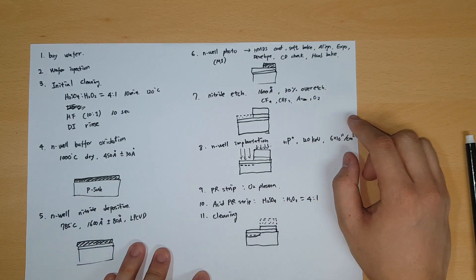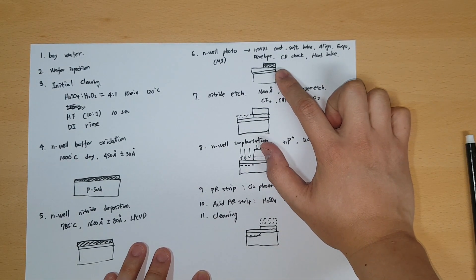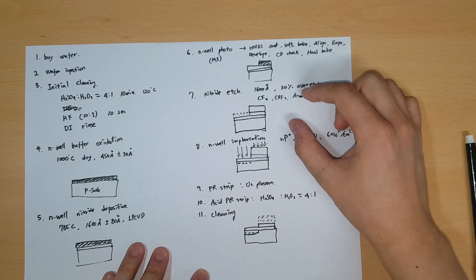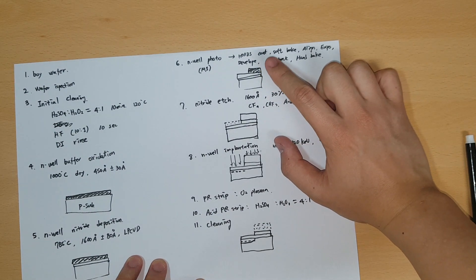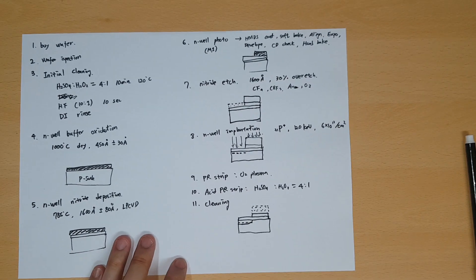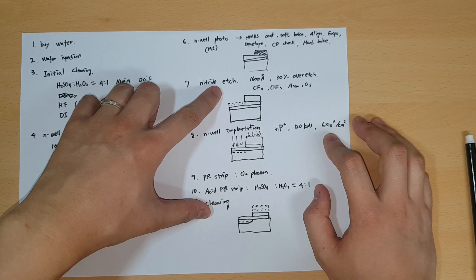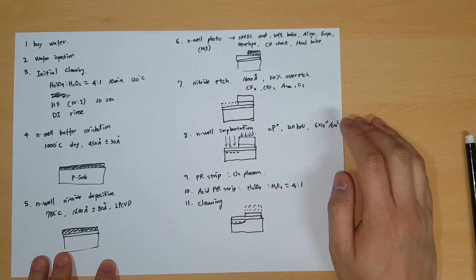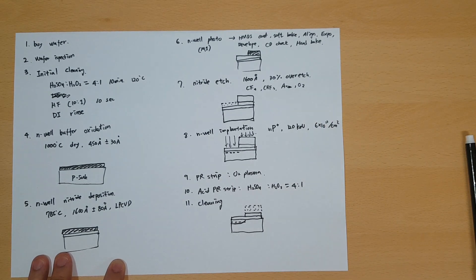Step seven: you etch the nitride layer. In my diagrams, the black layer represents what we just made and the dotted image represents what we erased at that step. So the black layer is what we made, and the dotted area is what we removed. There will be a nitride edge here, and you must always over-etch — if you don't remember why, watch my videos on the etch process. Next, step eight, you implant the N-well.